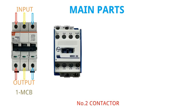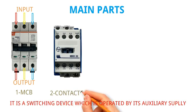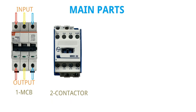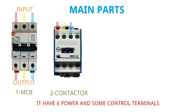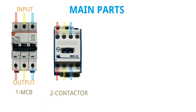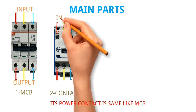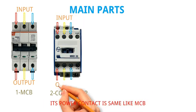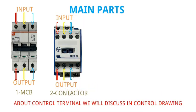Second is the contactor. It is a switching device which is operated by its auxiliary supply. It has six power and some control terminals. Its power contacts are the same as MCB. About control terminals we will discuss in the control drawing.